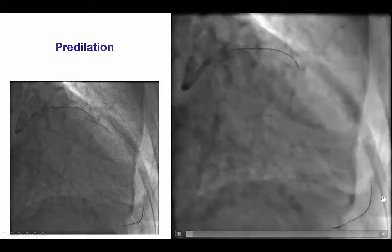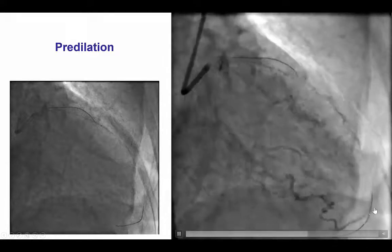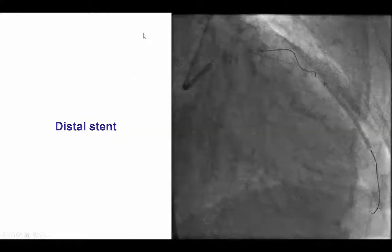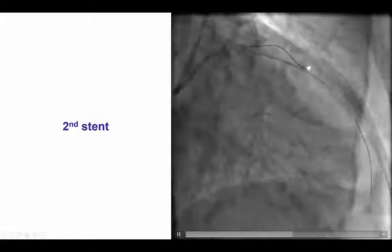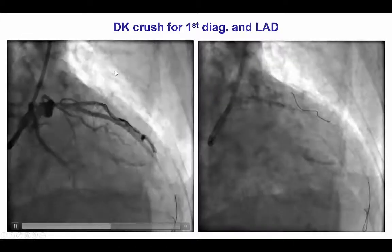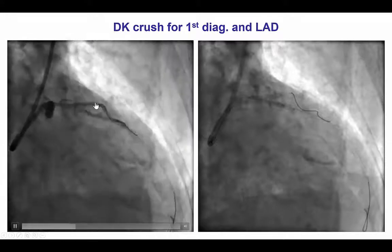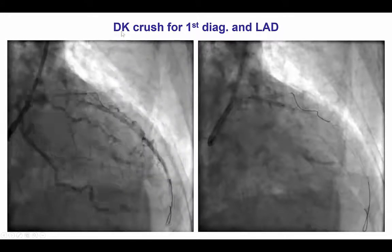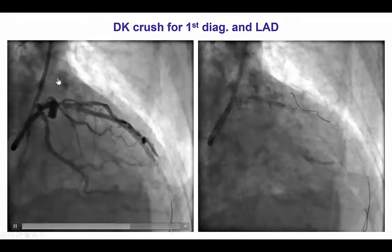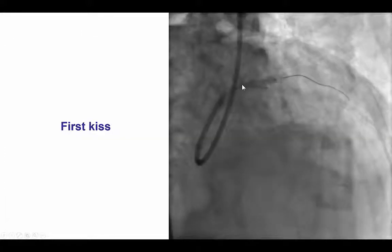The microcatheter was advanced into the distal vessel. The Pilot 200 was exchanged for a workhorse guidewire, as we do for all CTOs, and stents were placed in the distal to mid LAD as well as more proximally. We maintained the wire into the large diagonal branch to ensure access, and given the use of a dissection re-entry technique with such a large branch, we decided to use DK crush — double kiss crush — for the first diagonal and LAD. A stent was first inserted into the diagonal branch and crushed with a balloon in the LAD. The diagonal branch was re-wired and the first kiss was performed.